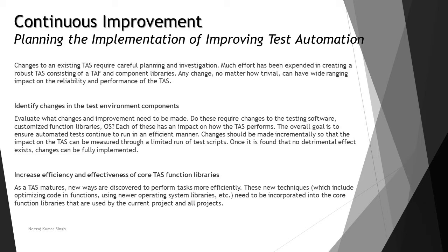The very first parameter is identifying changes in the test environment components, which simply means evaluating what changes and improvements need to be made. Do these require changes to the testing software, customization function libraries, or operating system? Each of these has an impact on how the test performs. Whether you're talking about software libraries or the operating system as a platform, the overall goal is to ensure automated tests continue to run efficiently.